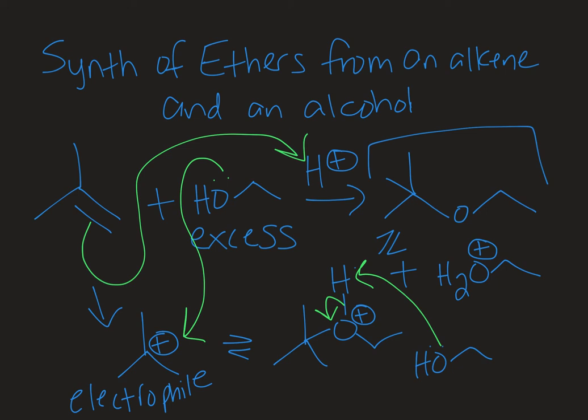So this is the synthesis of ethers from an alkene and an alcohol. One of the advantages of this method is that you don't get a mixture of products. The alkene is always going to serve as your electrophile in this type of reaction, and the alcohol is always going to serve as your nucleophile in this type of reaction. If you combine two alcohols, for example, you end up with a mixture of products. So this is an advantage in that you don't have to separate similar products from one another, and you can predict in many cases just the one product that's going to be formed.